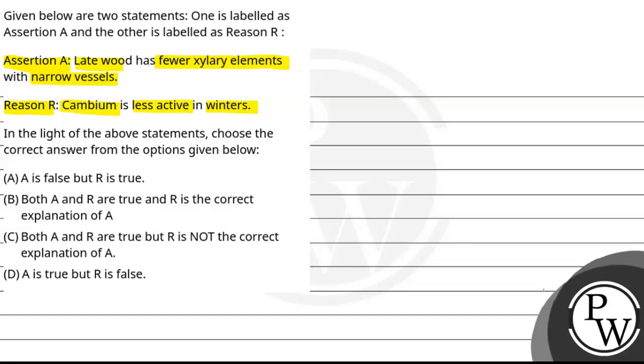Option A: Assertion is false but reason is true. Option B: Both assertion and reason are true, and reason is the correct explanation of assertion. Option C: Both assertion and reason are true, but reason is not the correct explanation of assertion. Option D: Assertion is true but reason is false.